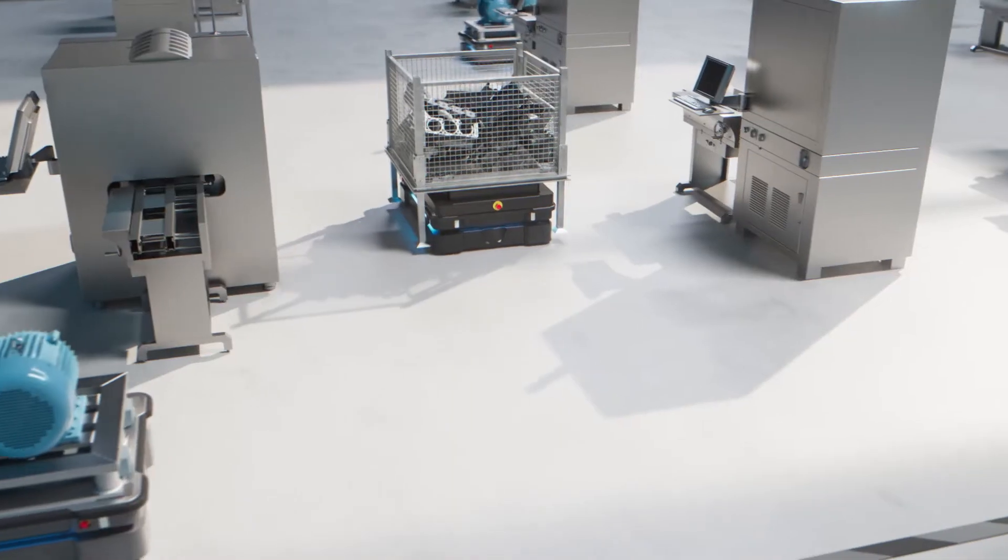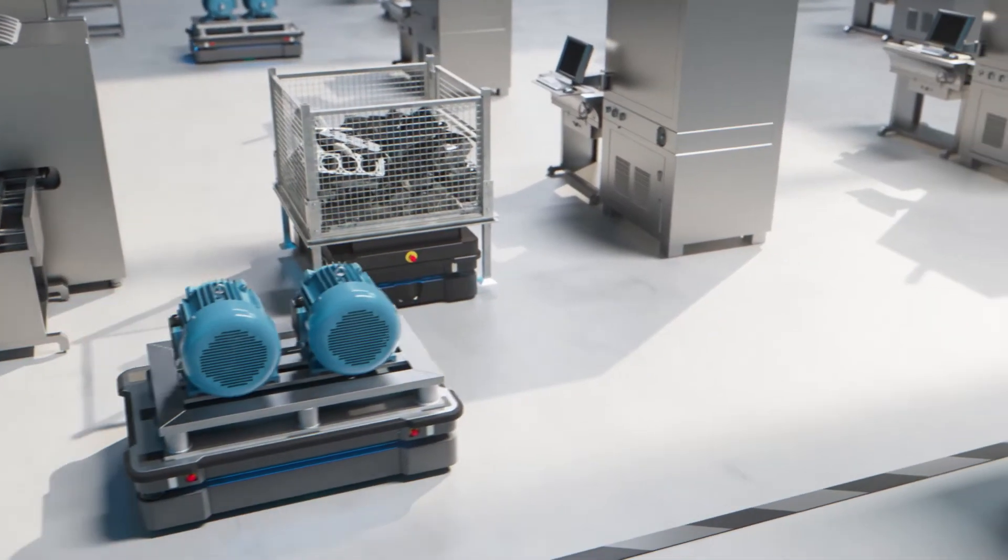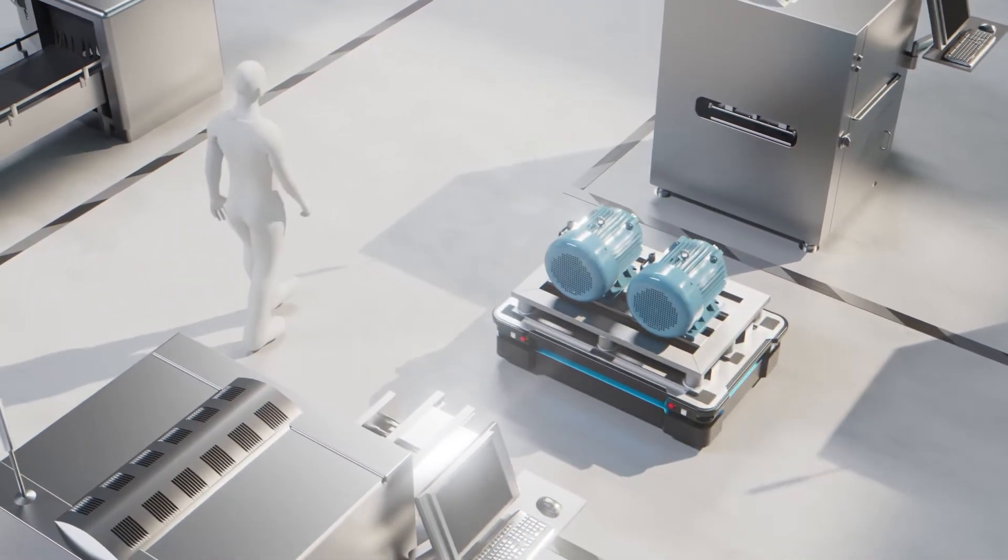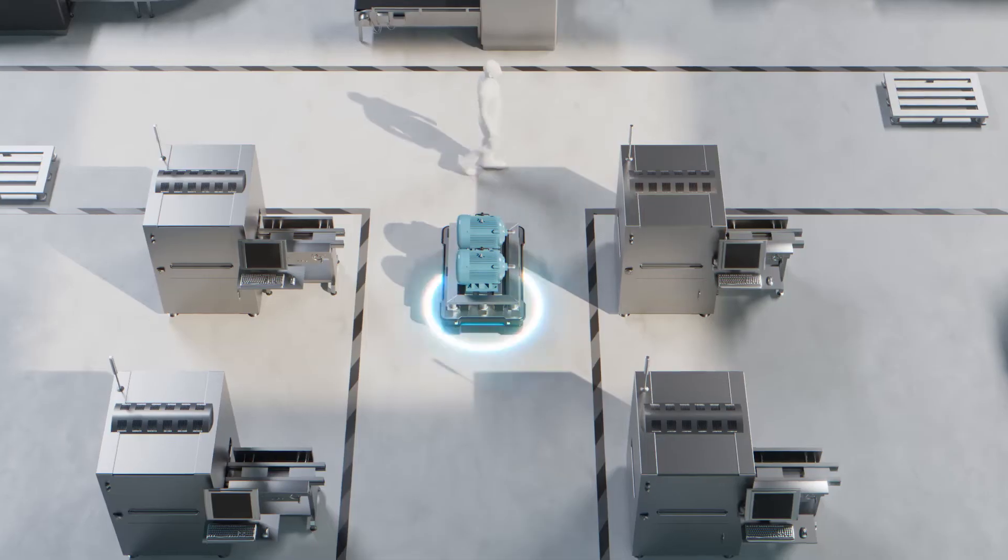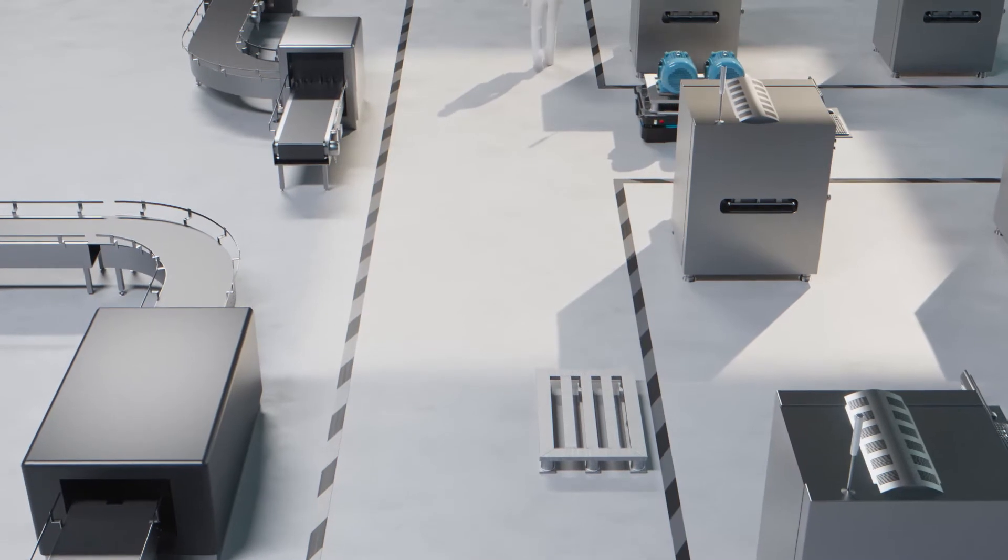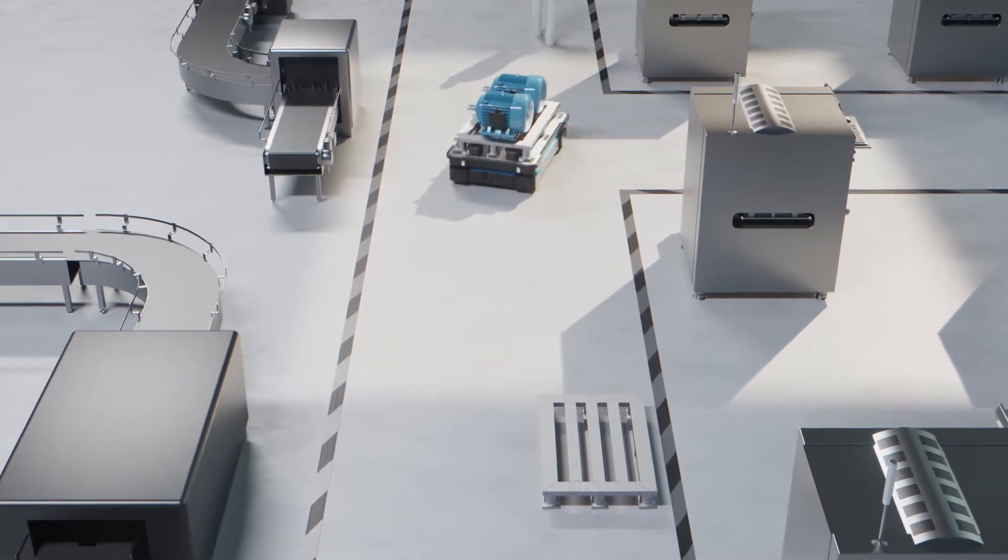As with all MiR robots, the MiR 600 and MiR 1350 are collaborative. With multiple built-in safety features, including dynamic safe zone monitoring, the MiR 600 and MiR 1350 always maintain a safe distance to employees and obstacles.